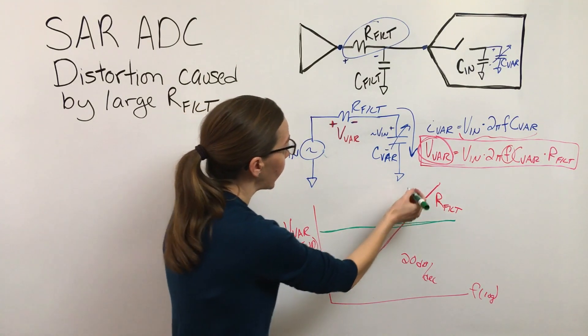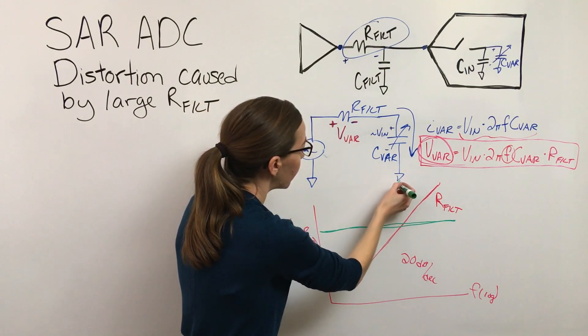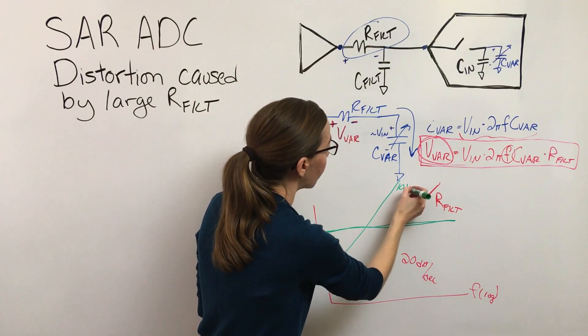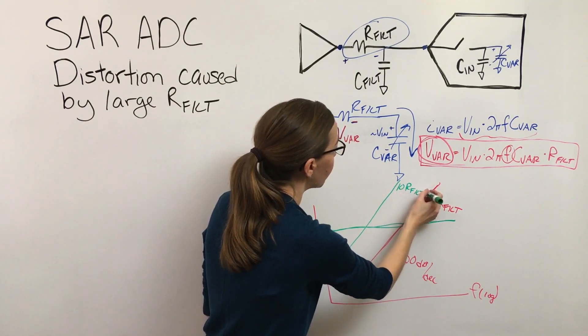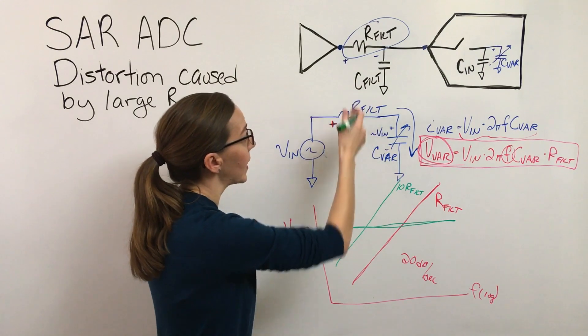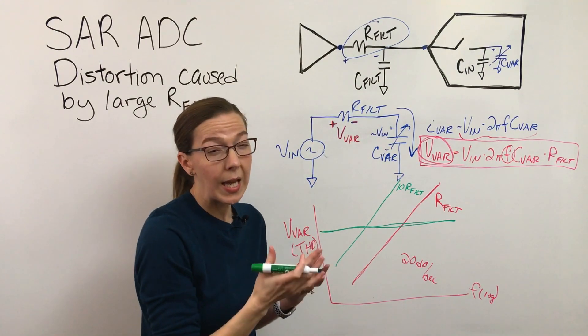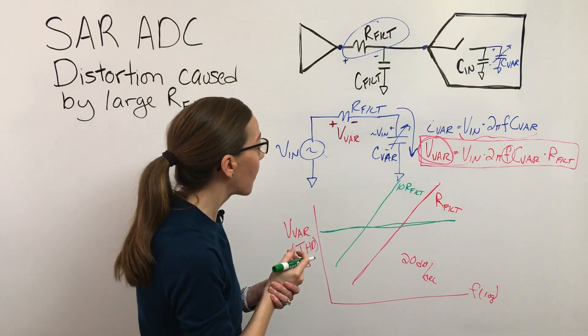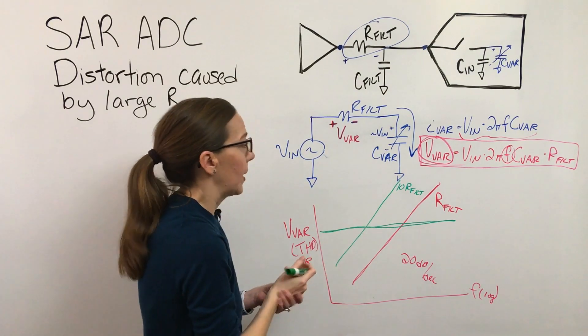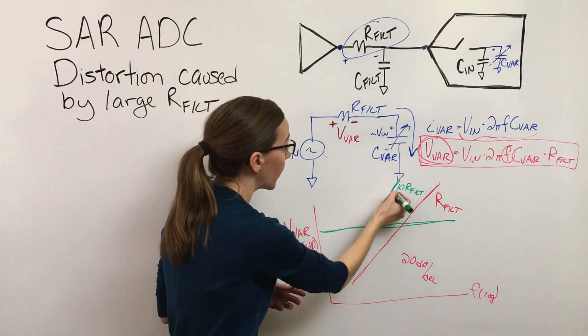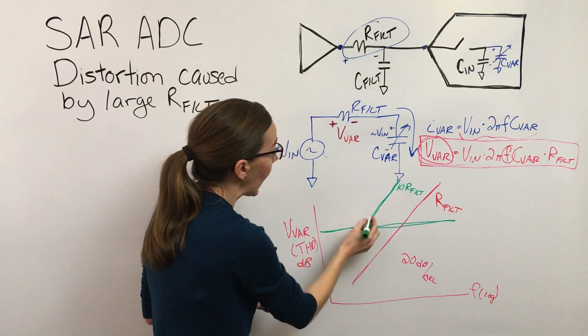But what you need to worry about is if you start—if you select a resistor, so let's say instead of the recommended resistor, and the recommended resistors in these cases are in the data sheet and they're usually somewhere between 10 and 30 ohms. Let's say you pick something that was, you know, you size this to be 300 ohms instead.